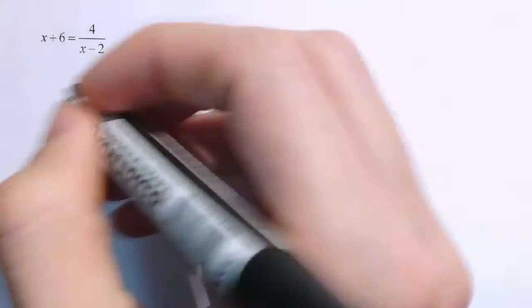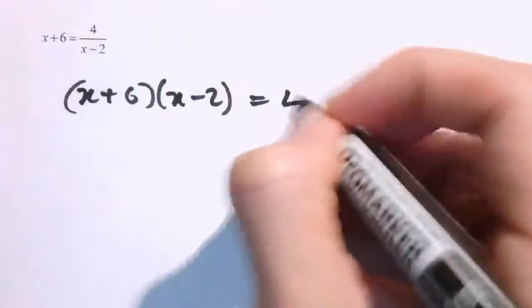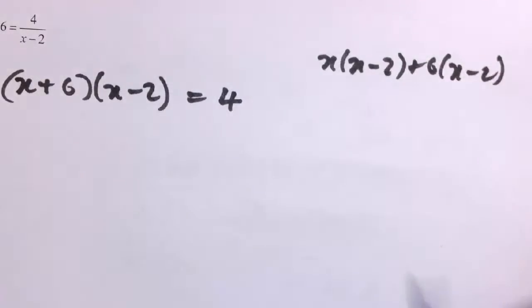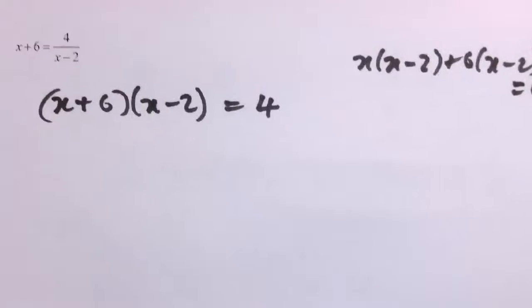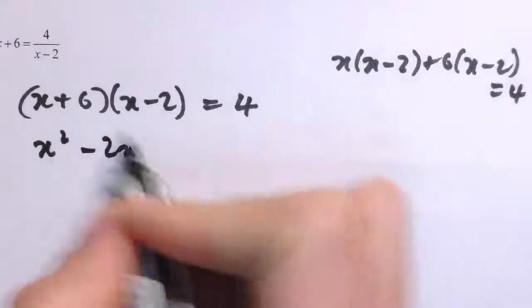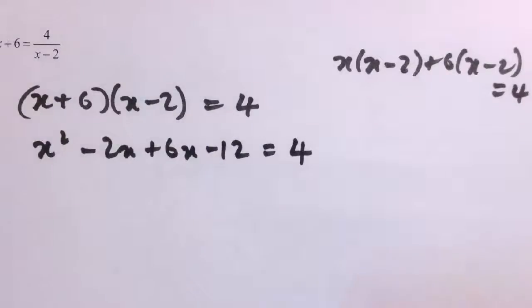Here's another example. This is really about being careful with brackets. We have x plus 6 equals 4 over (x minus 2). Multiplying both sides by (x minus 2) means multiplying the whole of the left-hand side — all of (x plus 6) — so we get (x plus 6)(x minus 2) equals 4. Multiplying out: x squared minus 2x plus 6x minus 12 equals 4. Again, a quadratic equation.